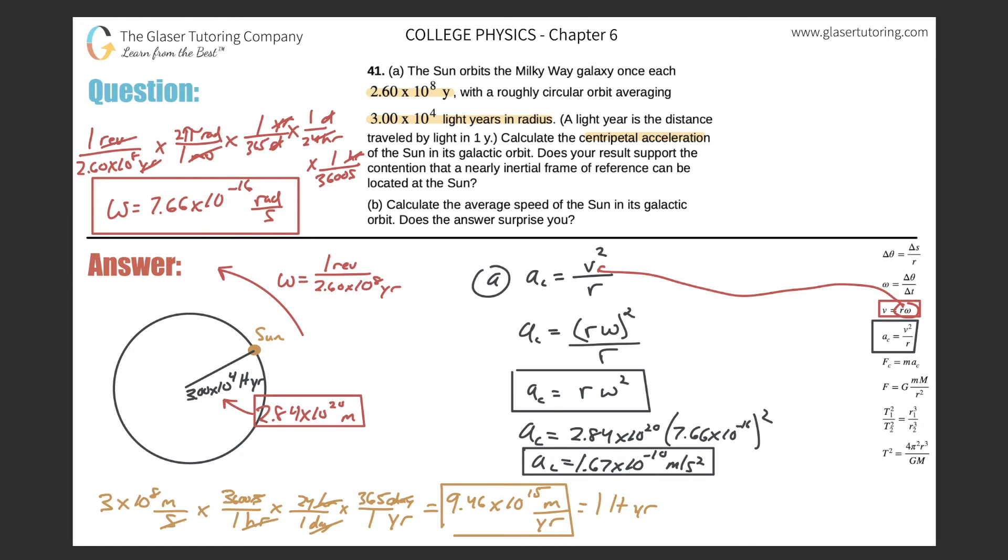So now letter B. It says calculate the average speed of the sun in its galactic orbit. So letter B, we got to calculate the average speed. So essentially we're looking for V. That is the average speed here. So let's write that on out. So V will equal R omega.